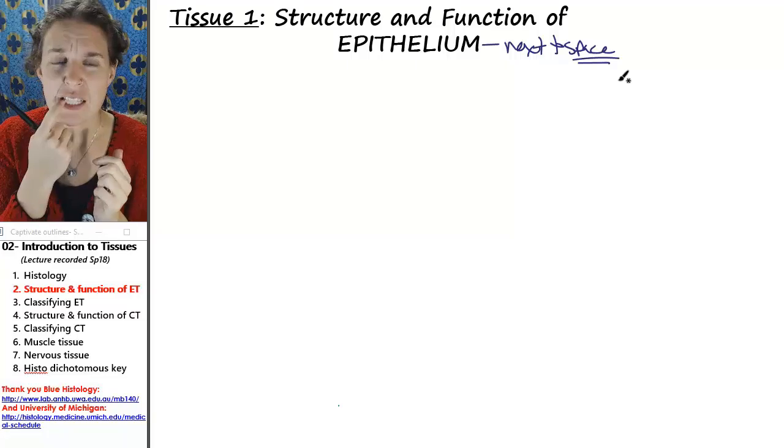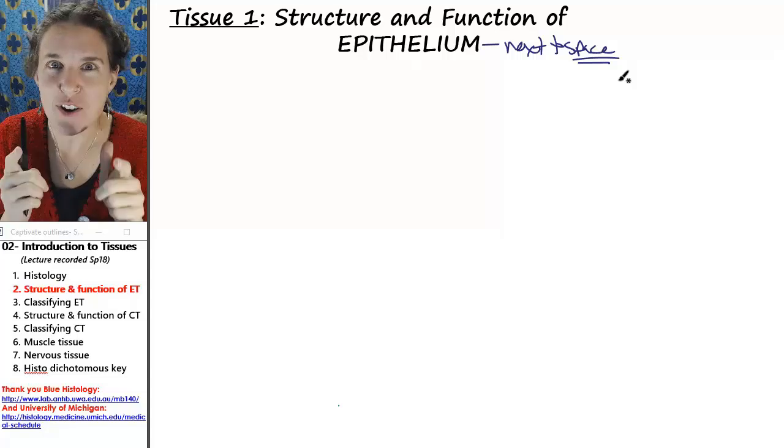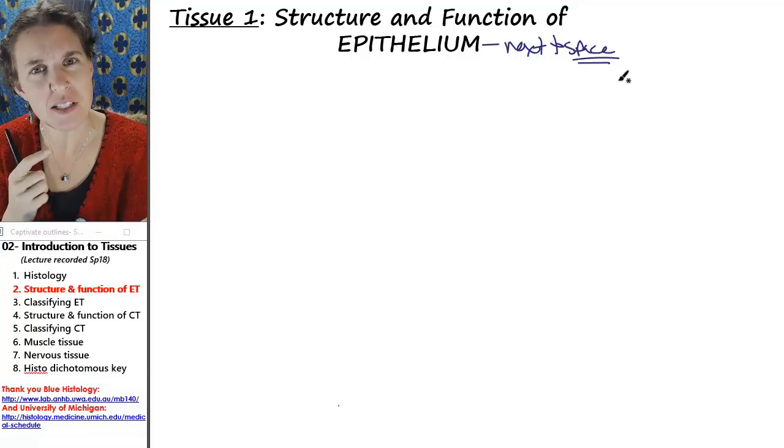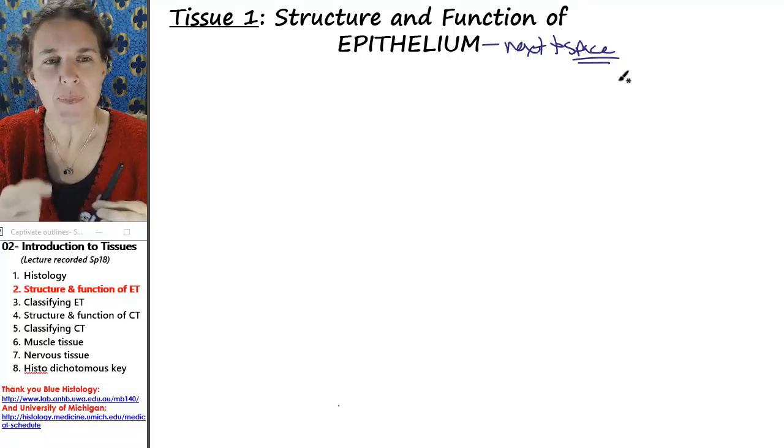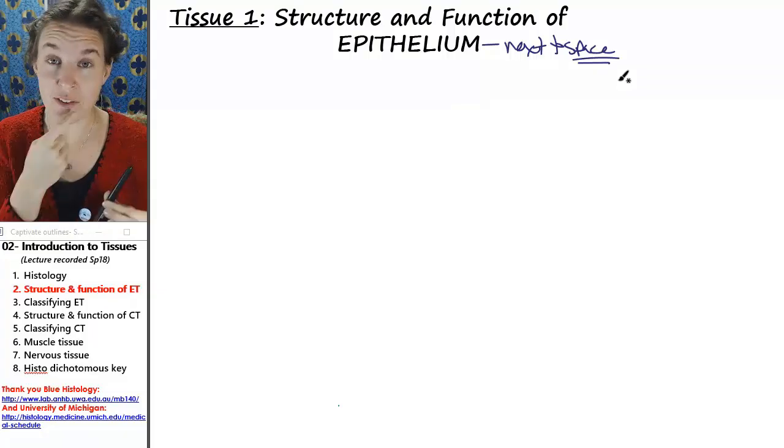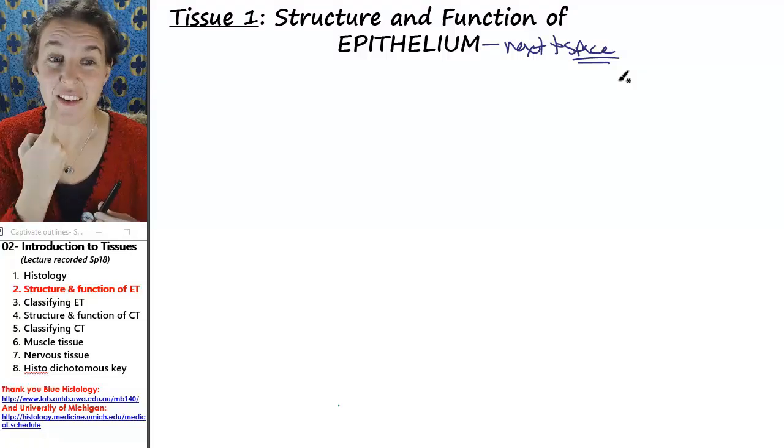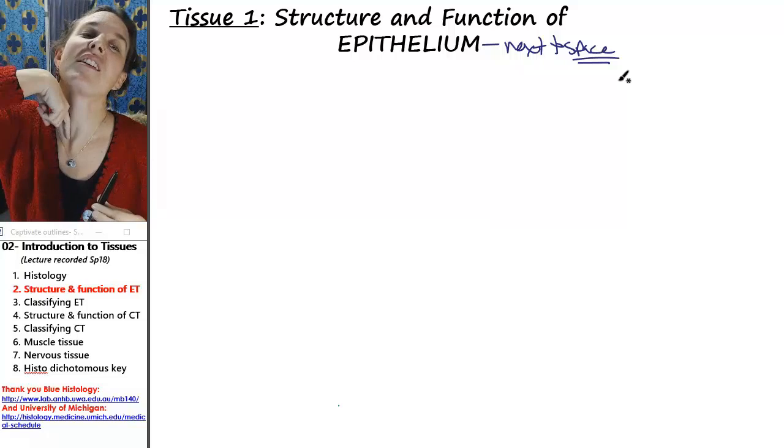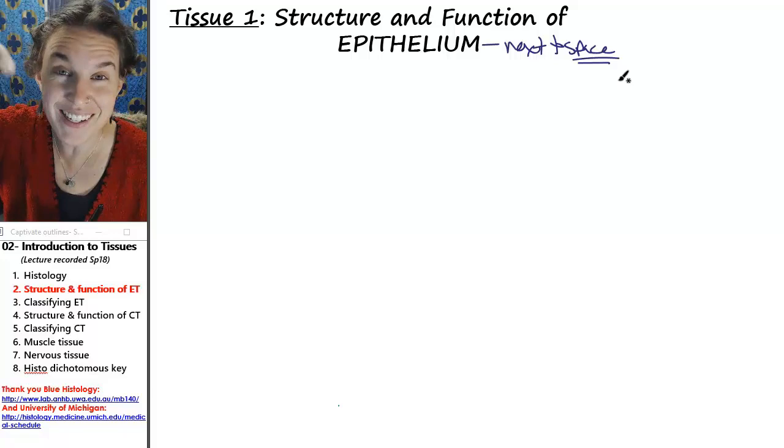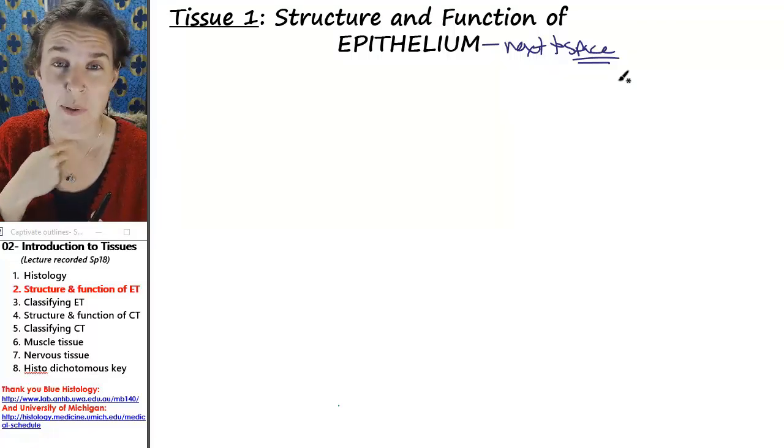I have a space in my mouth and everything except for my teeth in that space is all epithelial tissue. If I stick my finger in my mouth, everything I touch except for my teeth, I'm touching epithelial tissue. If I stick my finger and I continue down, everything that my finger is touching inside that body tube, my esophagus, that's all epithelium.